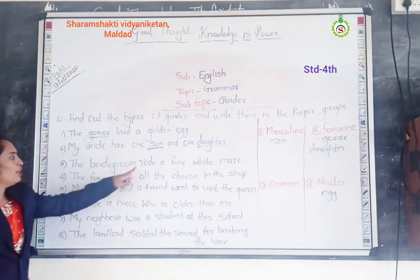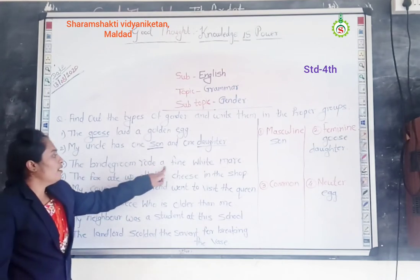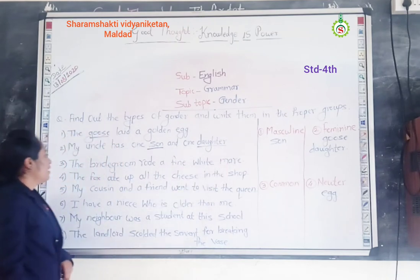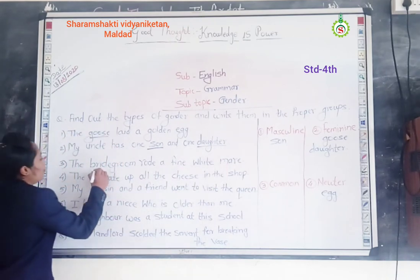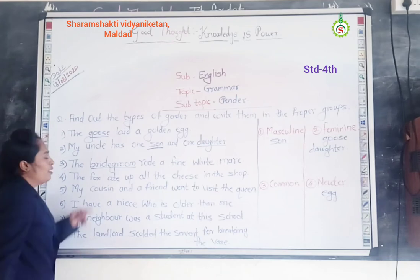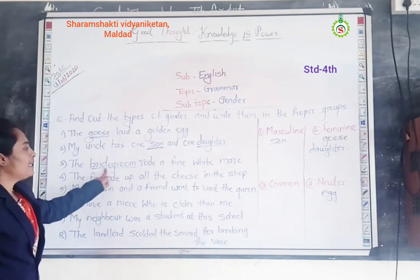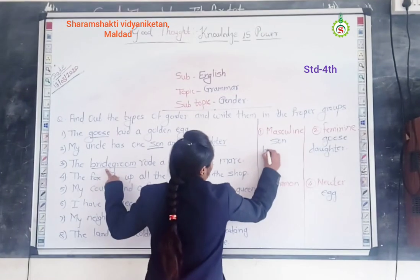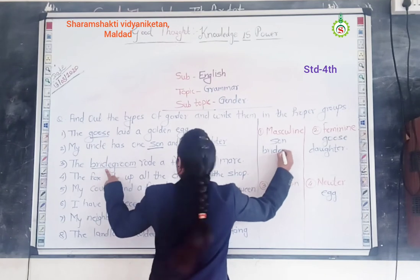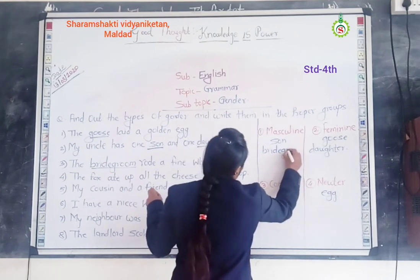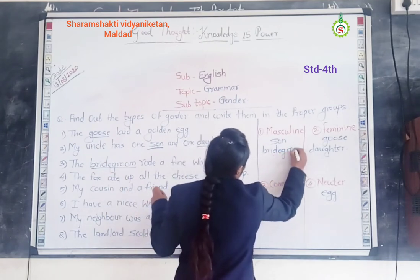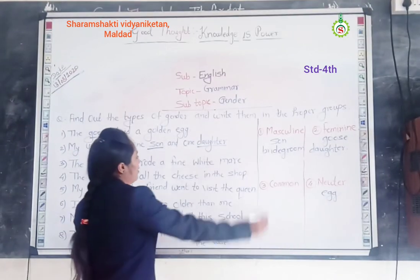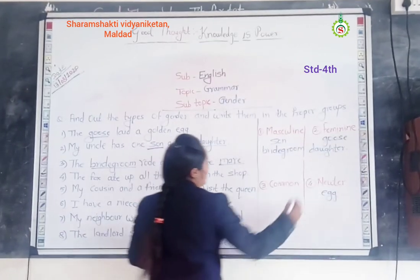Third sentence: The bridegroom wrote a 5-5-3. In this sentence, bridegroom is a masculine gender. And male is a feminine gender.